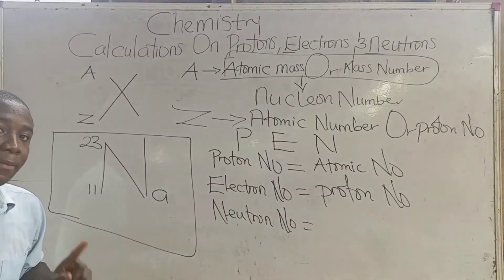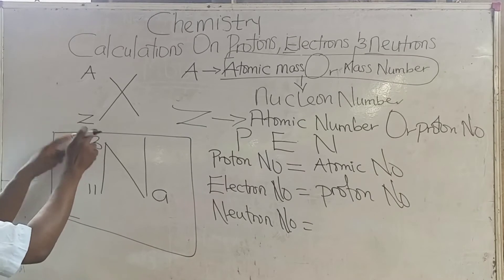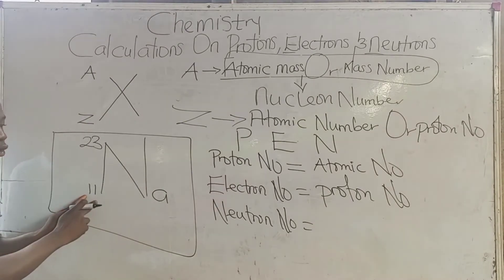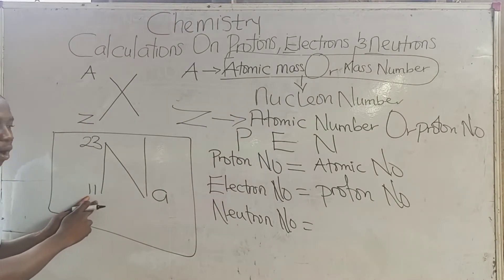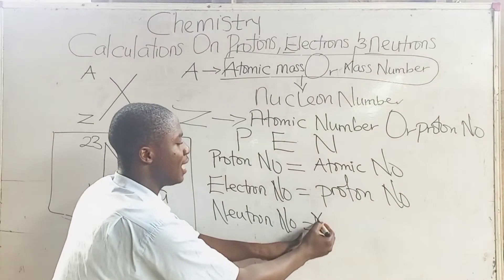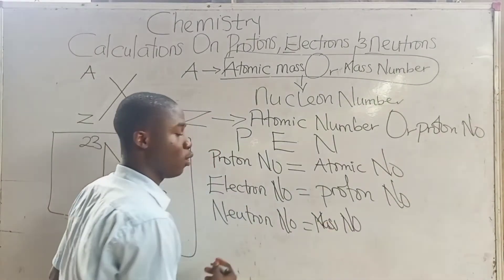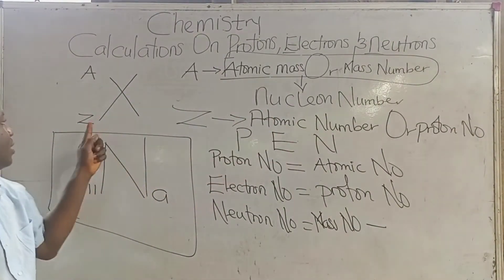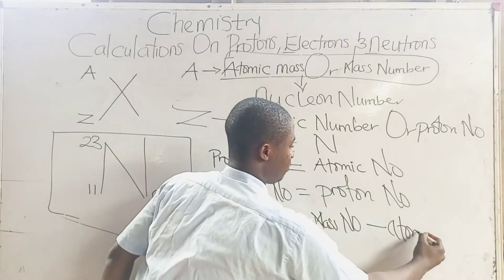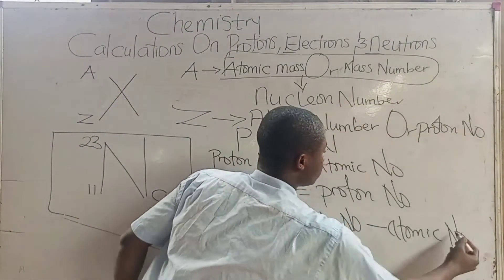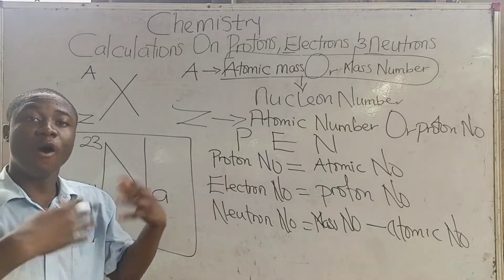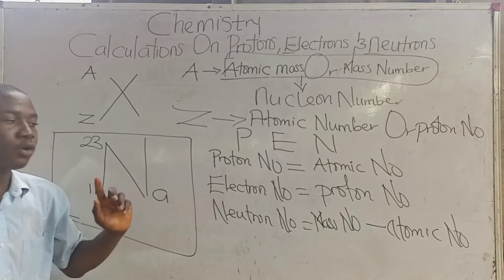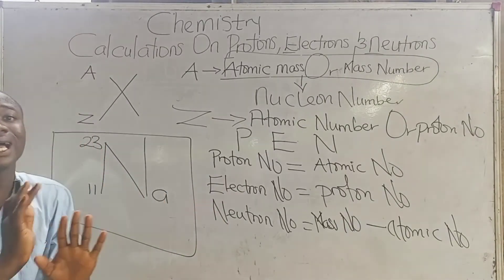The neutron number is calculated by saying mass number — because A signifies mass number, atomic mass, or nuclear number — minus atomic number. So the formula is: neutron number = mass number minus atomic number. These are the formulas we apply to solve for the proton number, electron number, and neutron number of a neutral atom.